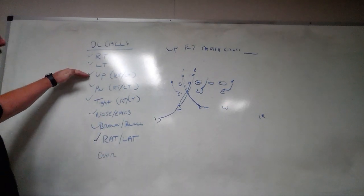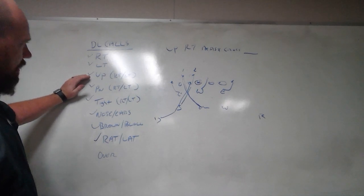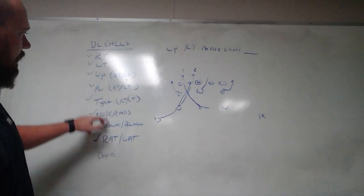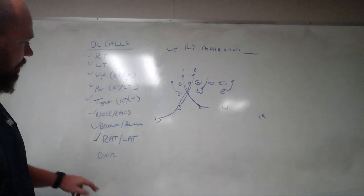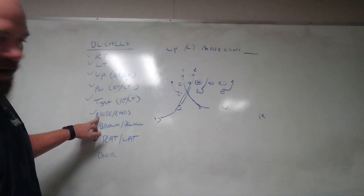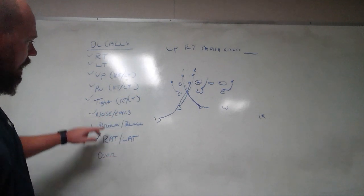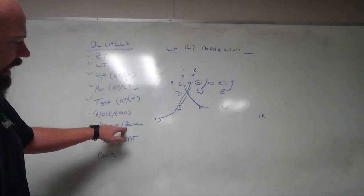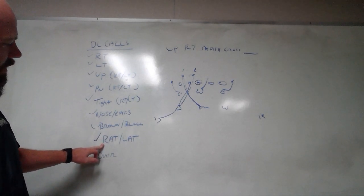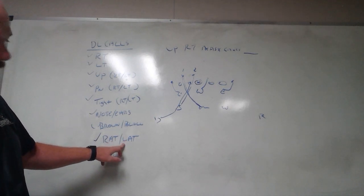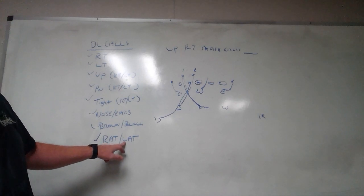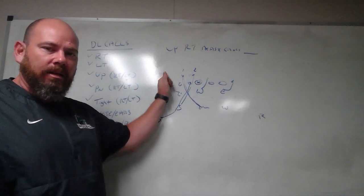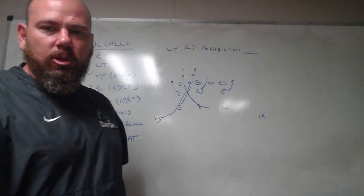Review: Right, Left, Up — just Up means stuff technique for the nose; Right or Left is a directional call. Pinch is a stuff technique with the nose unless given a right or left call. Tight is same. Nose is called Nose Right or Nose Left. Ears is called Ears Right or Ears Left. Brown — nose to B-gap right. Black — nose to B-gap left. Rat — defensive end to A-gap, everyone slants right. Lat — everyone goes left, right-side defensive end goes to A-gap. Over — everyone shifts a full man, Sam walks down, giving us a four-two-five.